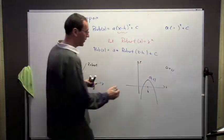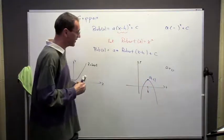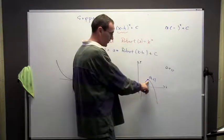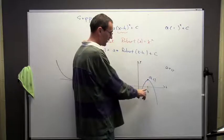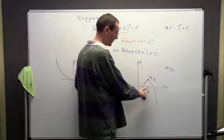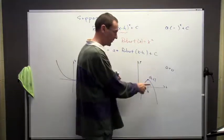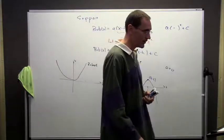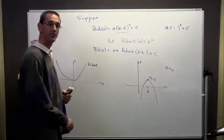Now, this point here, where we have either, in this case, a maximum, in the previous case we had a minimum, where this turns around, where this function either goes from increasing to decreasing, or goes from decreasing to increasing, we're going to call that the vertex.